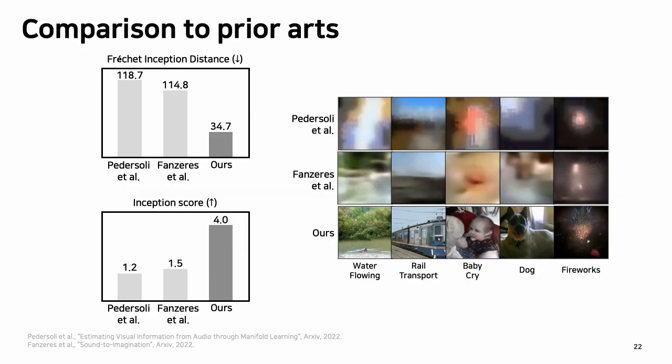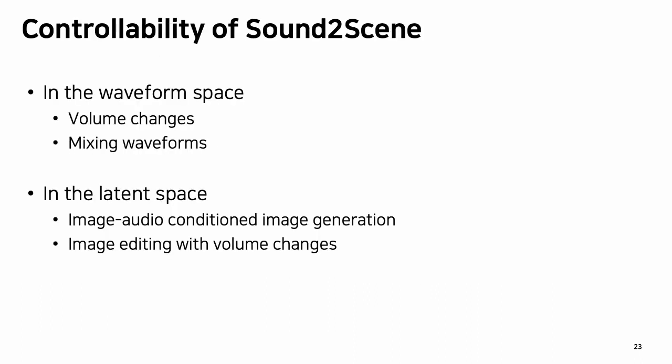In terms of quantitative results, we compare our model with prior approaches. Our model outperforms other methods by a significant margin in both FID and inception score. Additionally, our model generates visually plausible images while other models struggle to produce recognizable images. We also observe that even without an explicit objective, our model allows controllable outputs to some extent by applying simple manipulations in the waveform space or in the latent space.